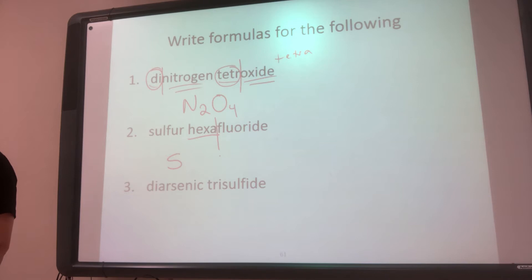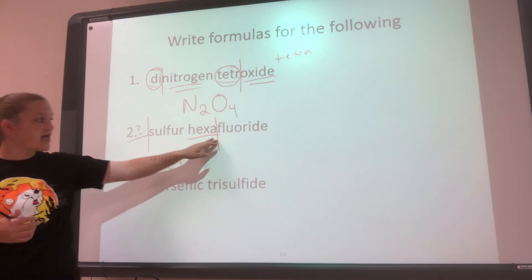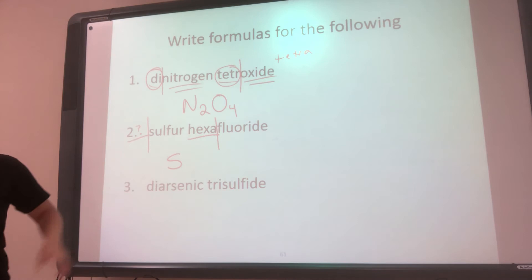And then we say, how many sulfurs do I have? Well, I don't have, I'm missing this prefix. Well, what's the only time we don't write a prefix? The only time we don't write a prefix is if it is a one, if it's mono. So if there's no prefix, but the second one has a prefix, then that reminds me it's molecular. So it means, oh, it must be mono, because it doesn't have the prefix. So then you'd say, okay, S1.